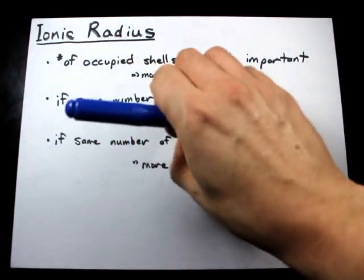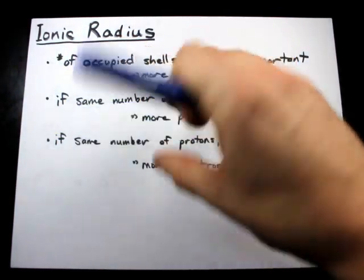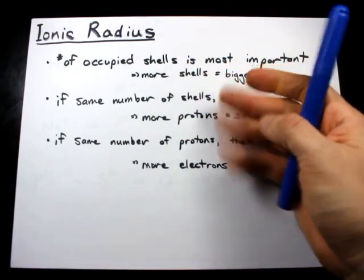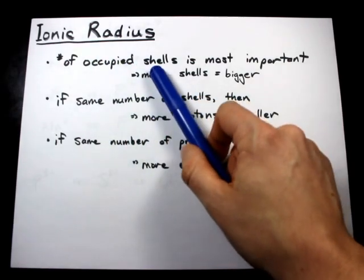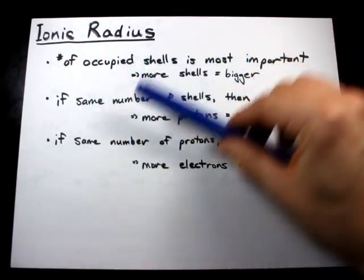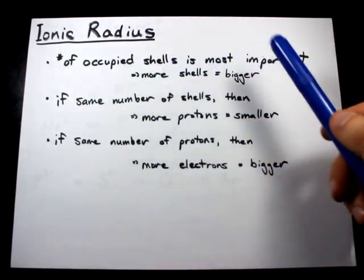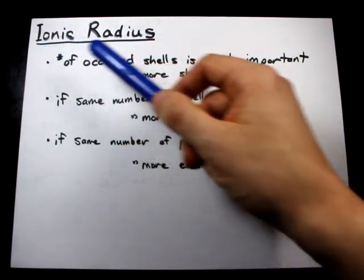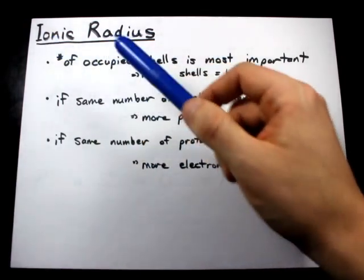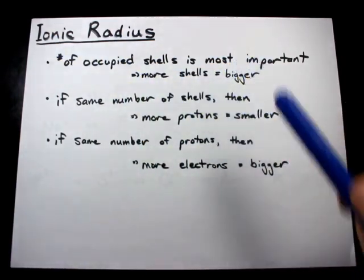Ionic radius, or how big an ion is, is governed by the same rules as atomic radius for the most part. The number of occupied shells, or the number of energy levels that have electrons in them, is the most important factor. More shells will mean a bigger ion.